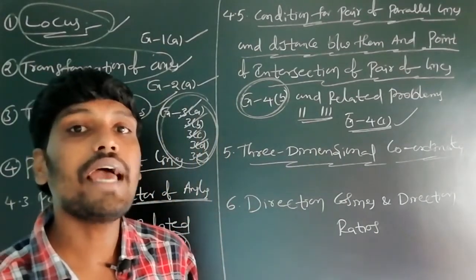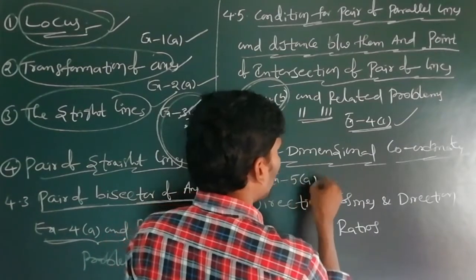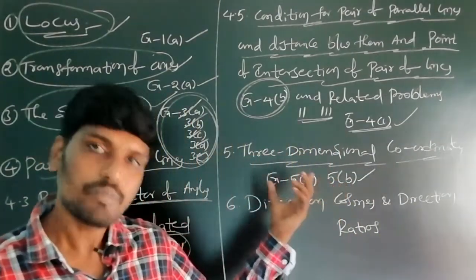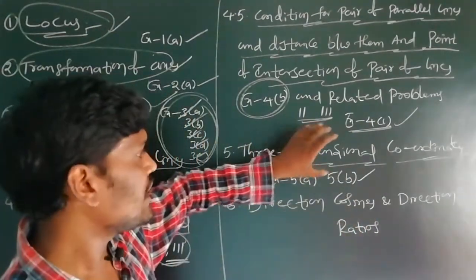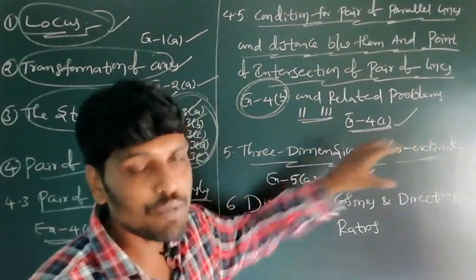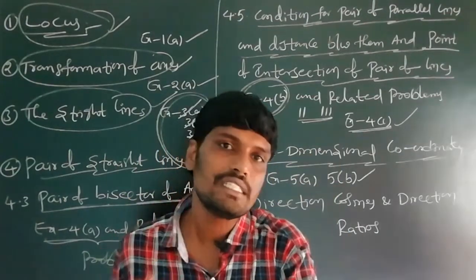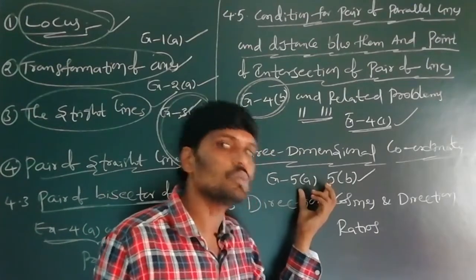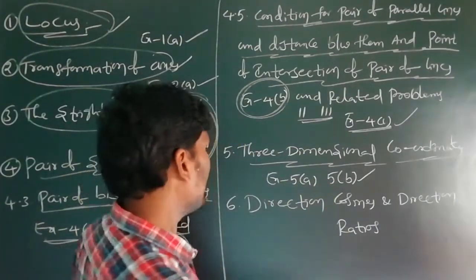The fifth chapter is Three Dimensional Coordinates. This chapter has two exercises — 5a and 5b. In this chapter, no topic has been deleted. Three Dimensional Coordinates is fully coming to the IP examination.